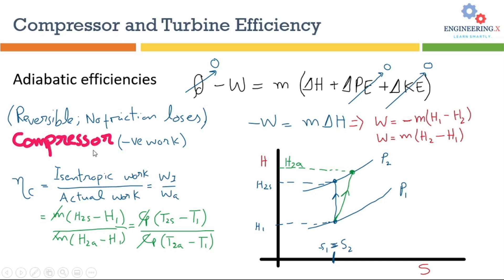In the case of compressors, work done is negative. Why? Because by definition, as a thermodynamic convention in some textbooks, work done by the system is negative. For a compressor, we have negative work done, and we can rearrange this equation. The final work equation equals mass flow rate of the fluid times the change in enthalpy from point one to point two.